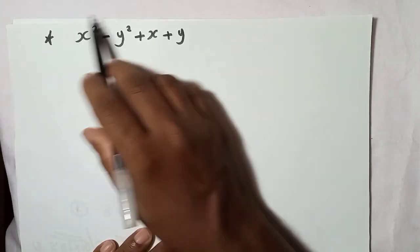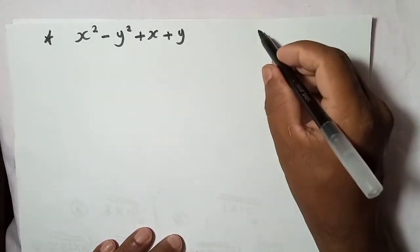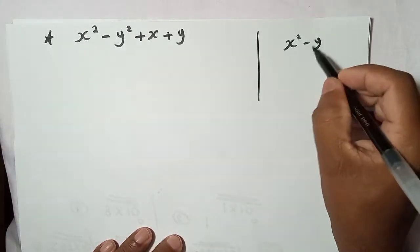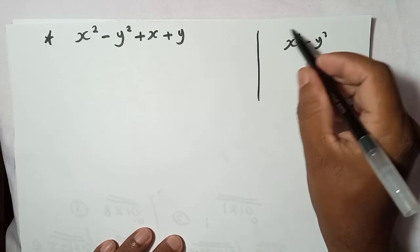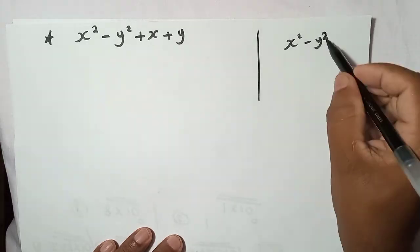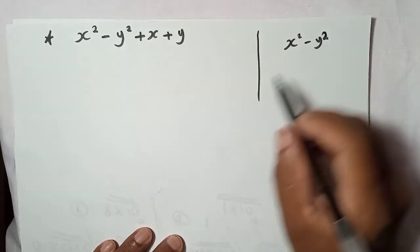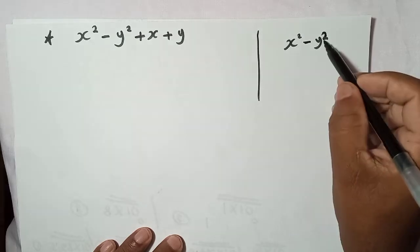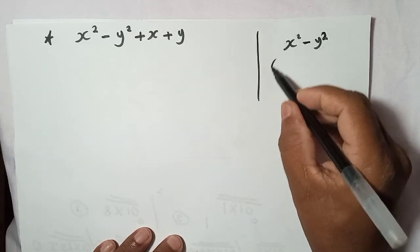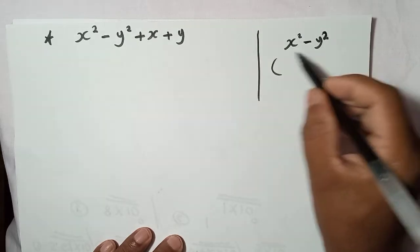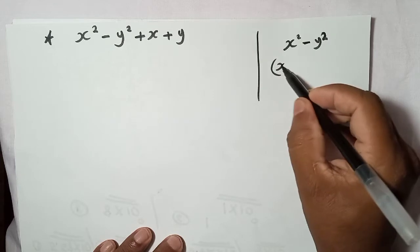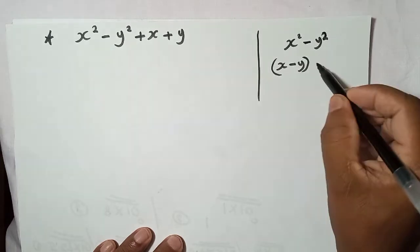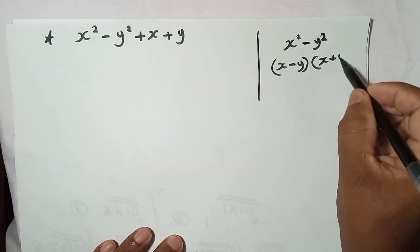But when you look here, you can feel this is the difference of two squares. You know x squared minus y squared — this is a square, and here also a square, and it must be minus between them. After you factorize, the answer will be x minus y, then x plus y.